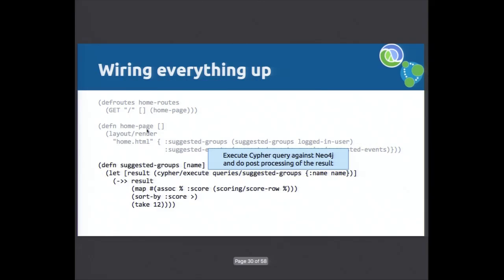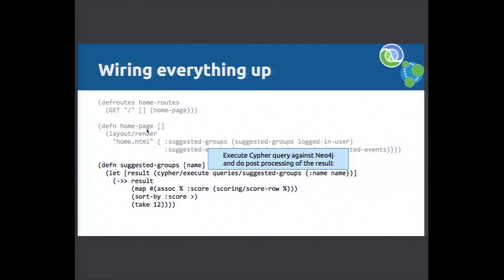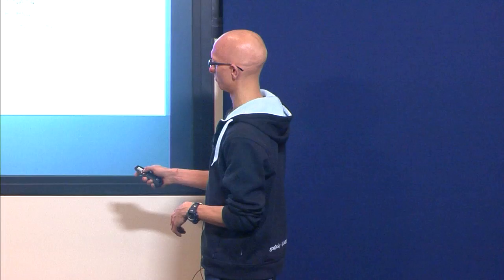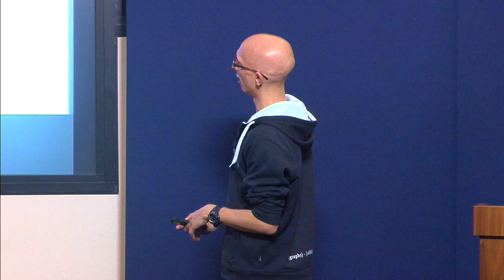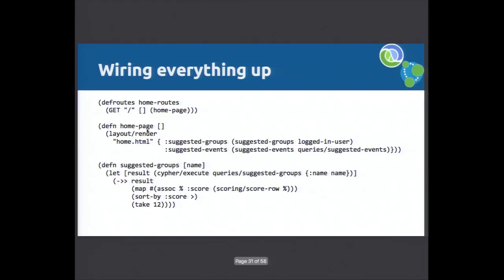The suggested groups function executes a query, collects the result, then iterates over it and calculates a score for each row. We do some more interesting scoring in Clojure than we did in the browser — it's quite a nice language for that. Then we sort by score and grab 12 results, because it's easy to display 4-4-4 on the next page. That's basically all the code I had to write to run a query and do some scoring on it.